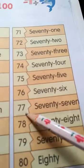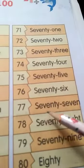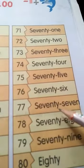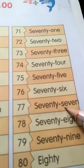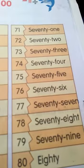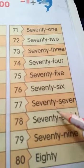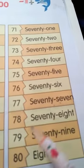77. S, E, V, E, N, T, Y - seventy. 7 - S, E, V, E, N - seven. 7. 77.